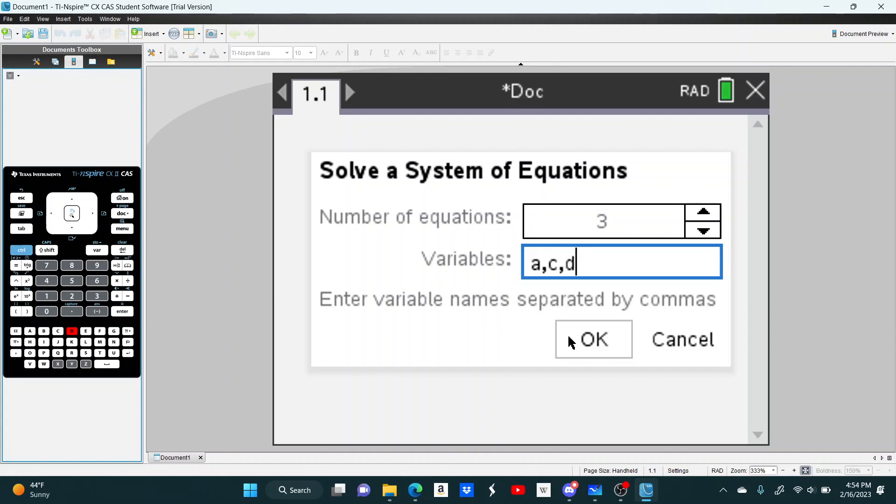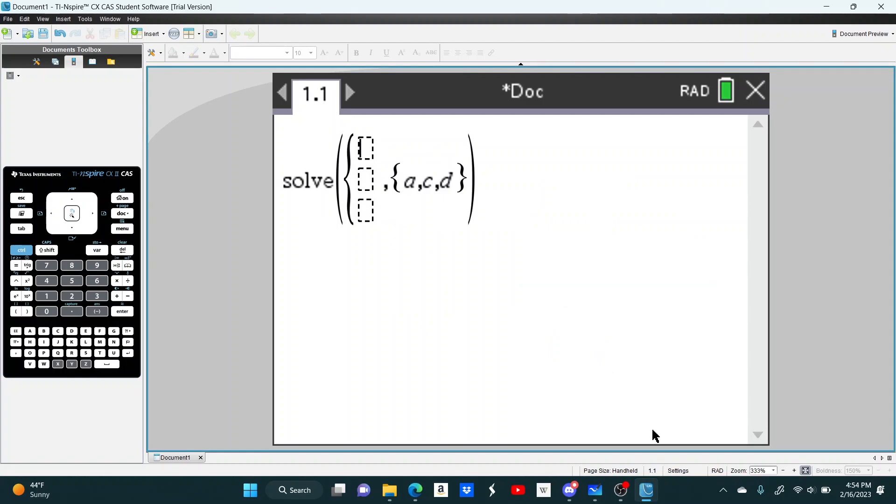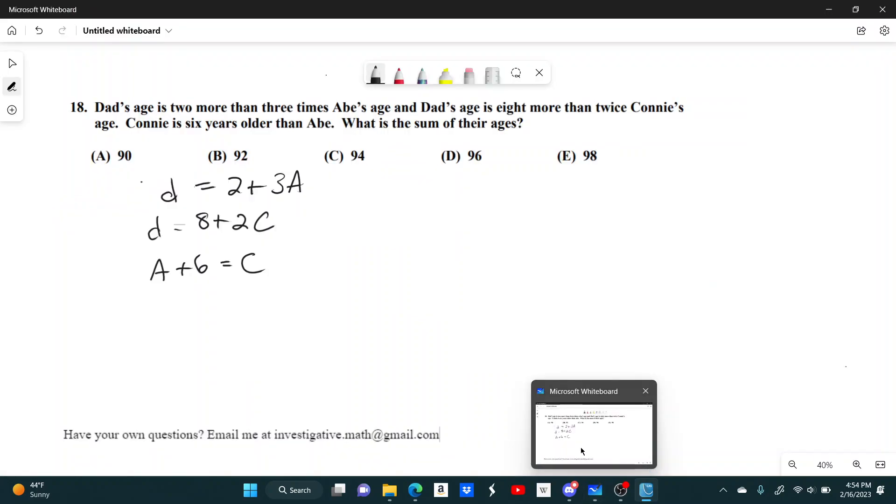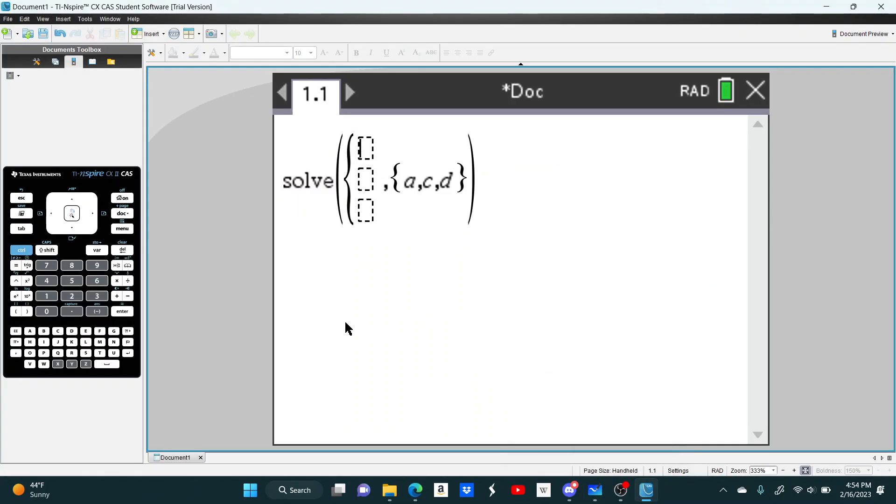Which you can make those anything. I just use A, C, and D because those are the first letters of the names. It makes it harder to get confused. Okay, so our first equation is D equals 2 plus 3A.